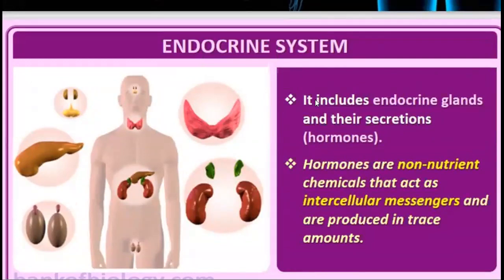The endocrine system includes the endocrine glands and their secretions. Hormones are non-nutrient chemicals that act as intercellular messengers and are produced in trace amounts. The hormones are not nutrients — they are chemicals secreted by our body and they are produced in a very small amount. Trace means a very small amount.